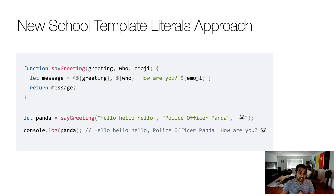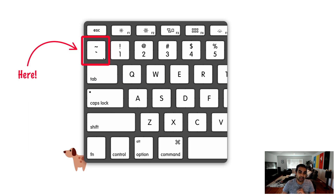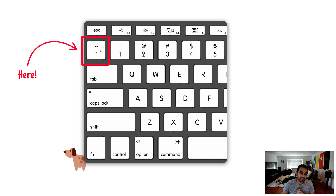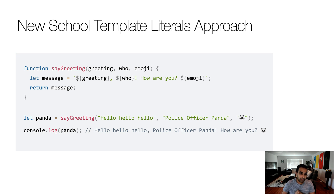We have a variable called message, and in this case, it's not a series of weird quotation marks and plus characters — we have some equally weird symbols. First, we have the back tick character. You're wondering what is the back tick character? On a typical US English keyboard, the back tick is the little character just to the left of the number one on the row of numbers. The back tick character indicates that what we're going to be defining is a template literal.